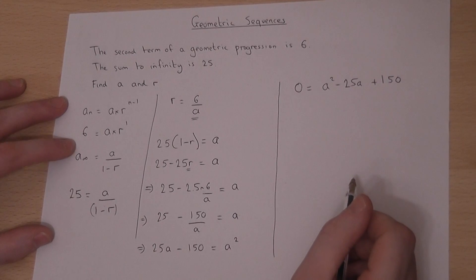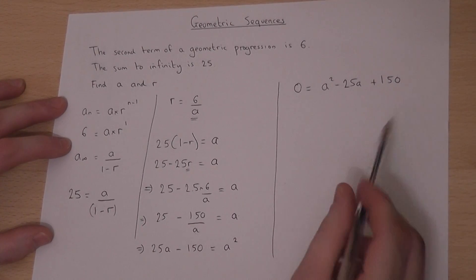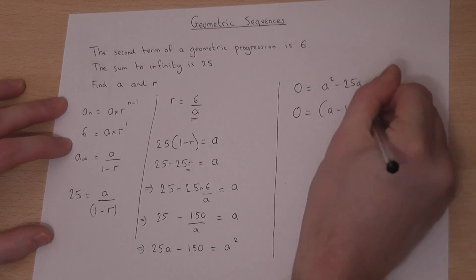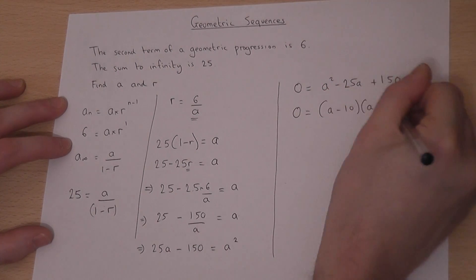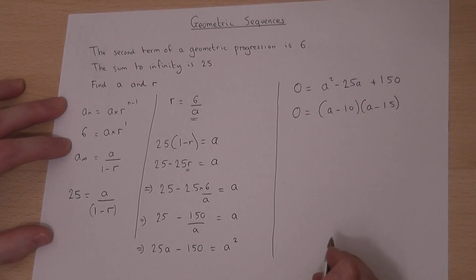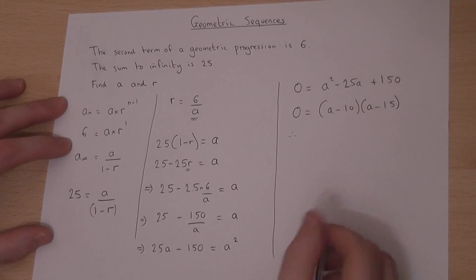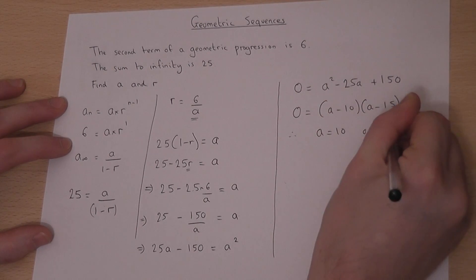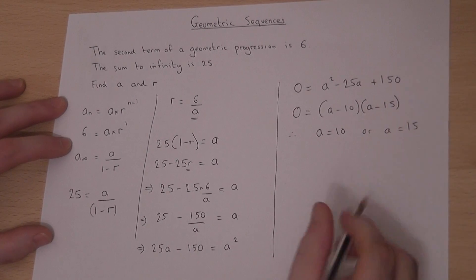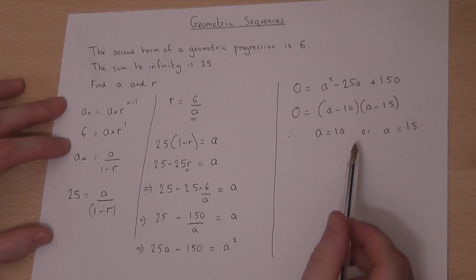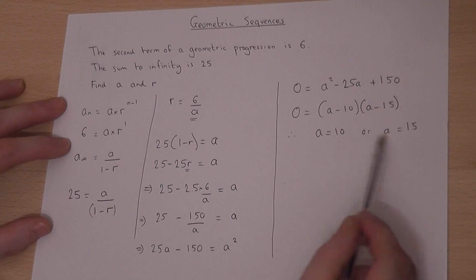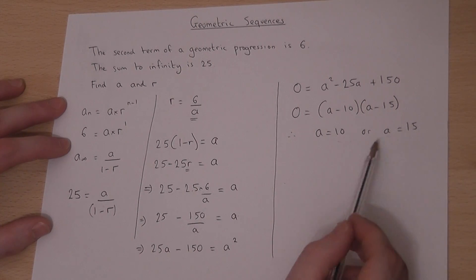We've now got this down to a quadratic equation, which factorises to (a minus 10)(a minus 15) equals 0. So a equals 10 or a equals 15. There are two distinct sequences — one which begins at 10 and another which begins at 15. And if we know what a is, we can find r.